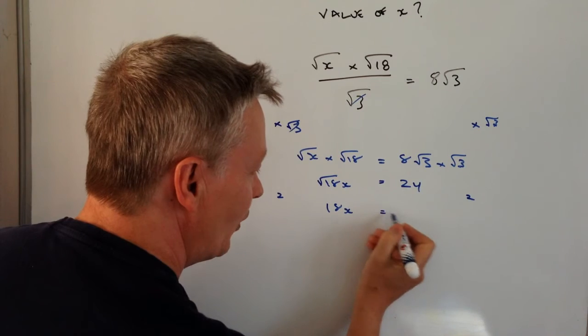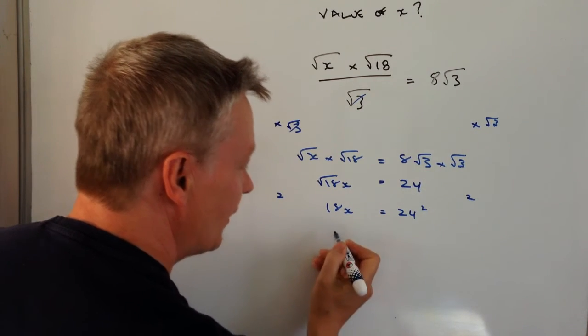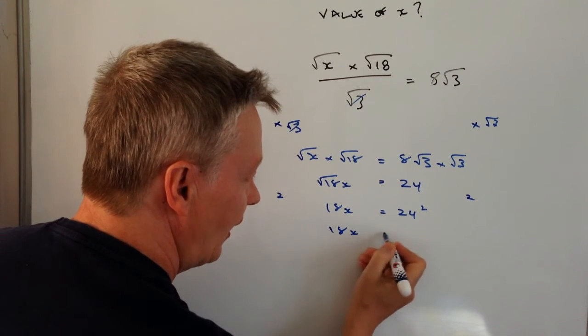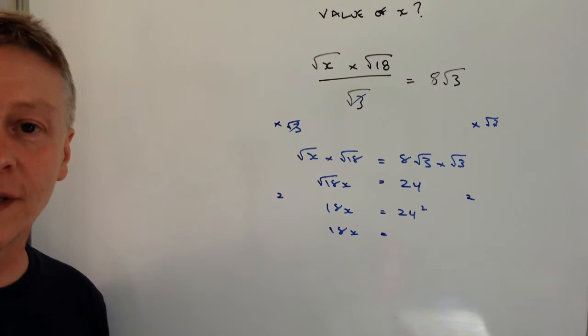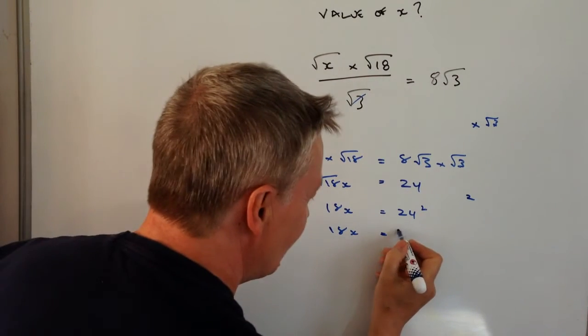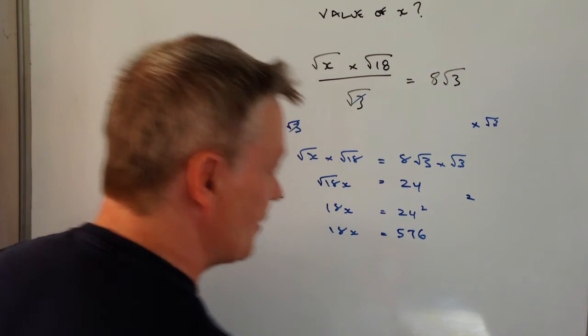On the right hand side I end up with 24 squared. If you pop that into a calculator, 24 squared is going to give you 576. So 576.